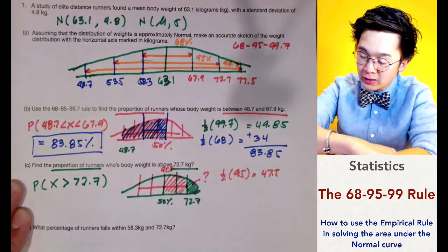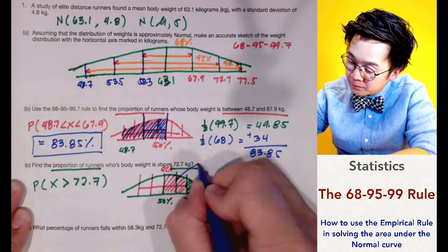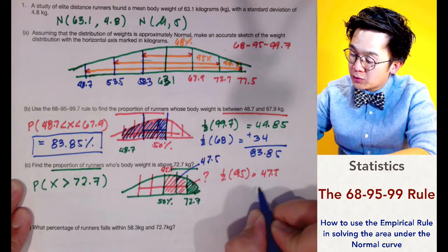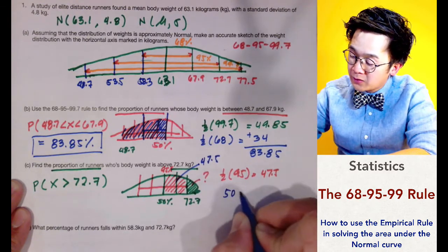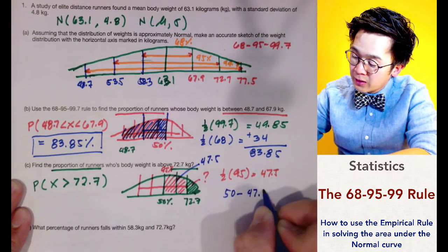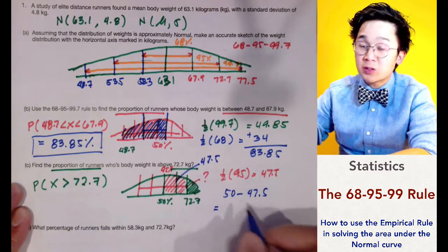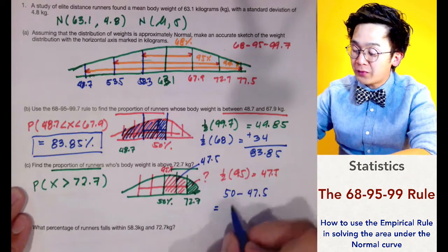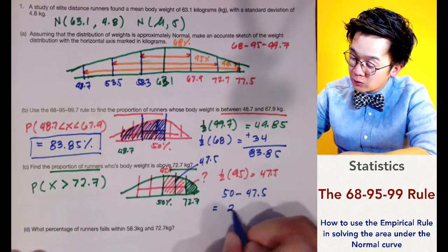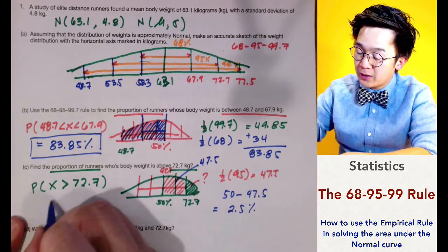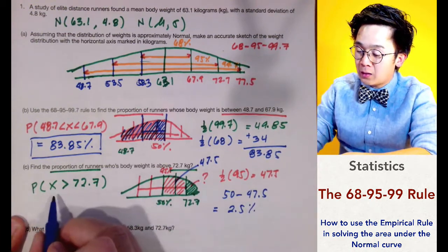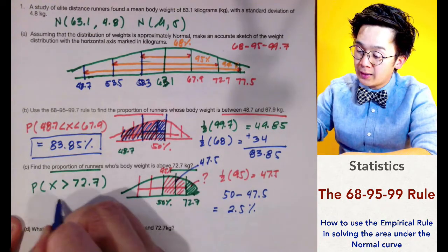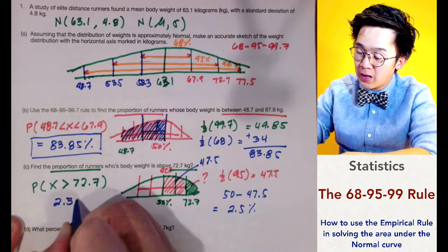We know that the area from the mean to 2 standard deviations above is 47.5%. To find the area above 72.7, we subtract from 50%: 50 minus 47.5 equals 2.5%. So the proportion of runners with body weight greater than 72.7 kilograms is 2.5%.